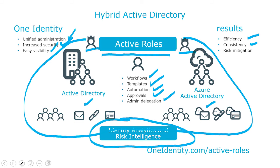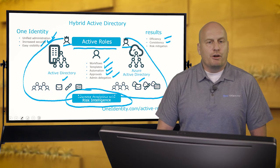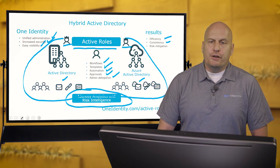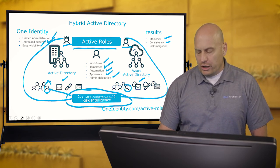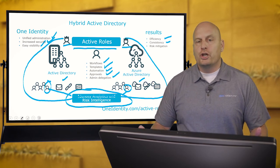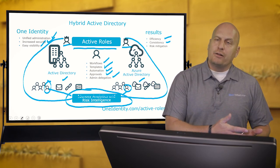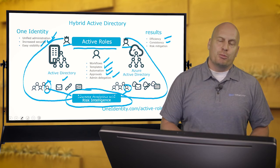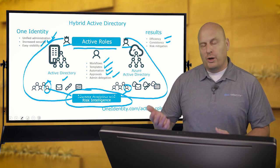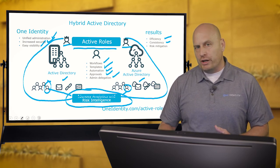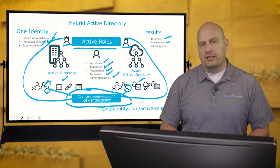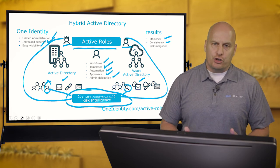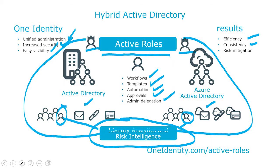And then it gives you easy visibility through a new solution called Identity Analytics and Risk Intelligence — it's part of our Starling Identity as a Service platform. It gives you the ability to look at an individual and compare their rights to other individuals, groups, or organizations, to determine whether the permissions and entitlements that person has are the correct ones for their job. It'll point out errors and gives you an easy way to remediate those errors. So the combination of Active Roles administration and Identity Analytics and Risk Intelligence gives you the complete picture to both secure and automate the management of Active Directory, and ultimately reduce your risk.